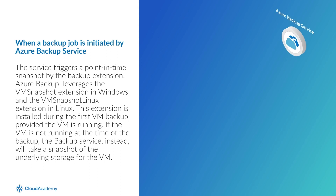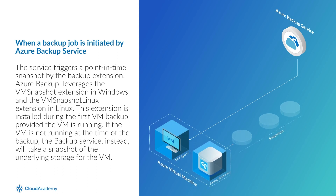When a backup job is initiated by the Azure Backup service, the service triggers a point-in-time snapshot by the backup extension. Azure Backup leverages the VM Snapshot extension in Windows and the VM Snapshot Linux extension in Linux. This extension is installed during the first VM backup, provided the VM is running.